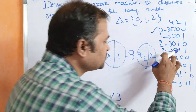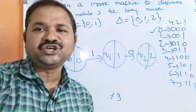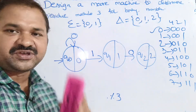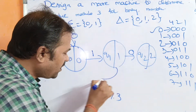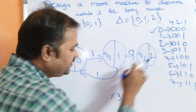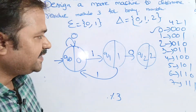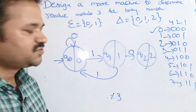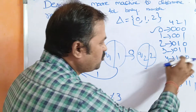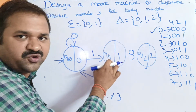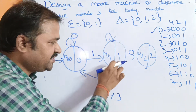For 3 (binary 011): 3 modulo 3 equals 0, so we need to reach Q0. On input sequence 0,1,1 we apply 1 to arrive at Q0. For 4 (binary 100): 4 modulo 3 equals 1, so we move to Q1 and apply self-loops on 0s. For 5 (binary 101): 5 modulo 3 equals 2, so we end up at Q2 — a self-loop there.